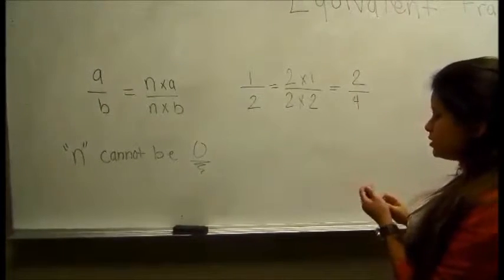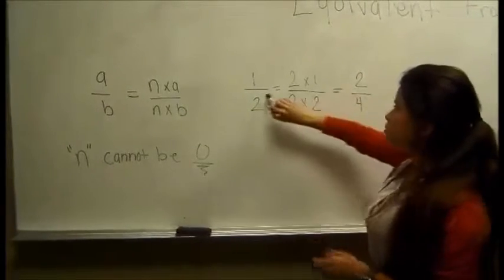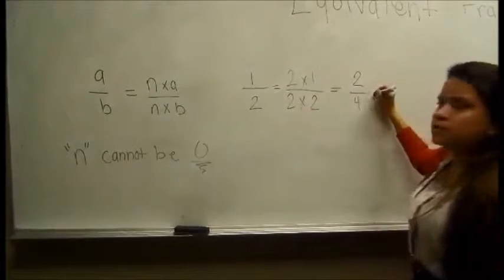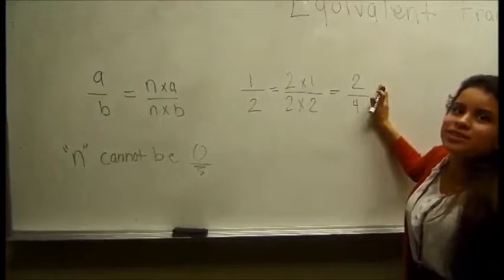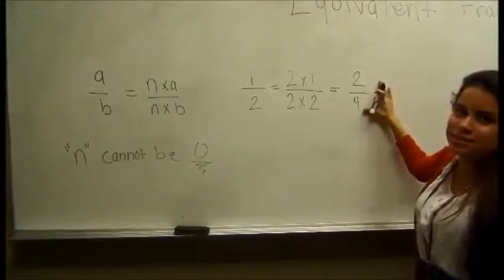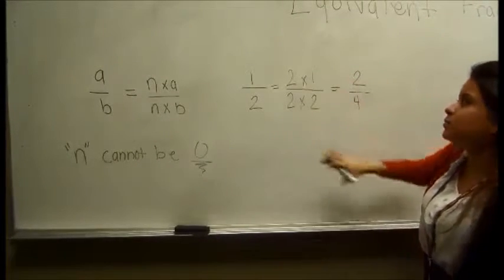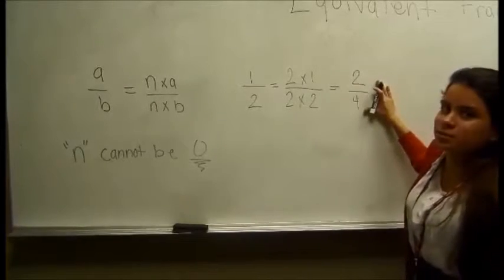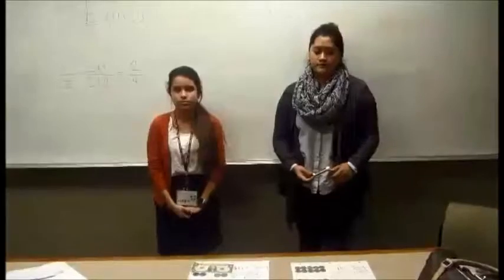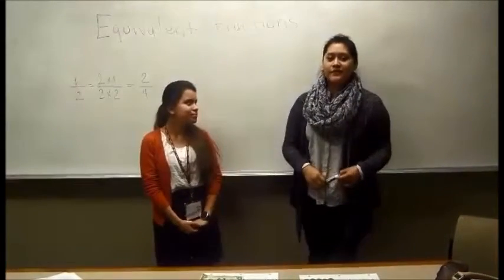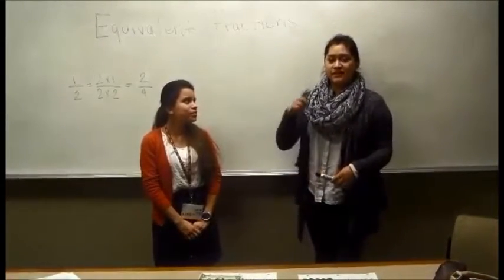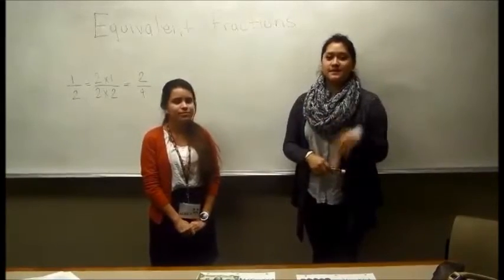So what we can see here is that 1 over 2 is not the same numbers as 2 over 4. But just because they are different numbers doesn't mean that it's a different amount. It's still the same amount. To conclude this lesson, we learned that equivalent fractions are fractions that use different numbers, but they are still equal to the same amount.